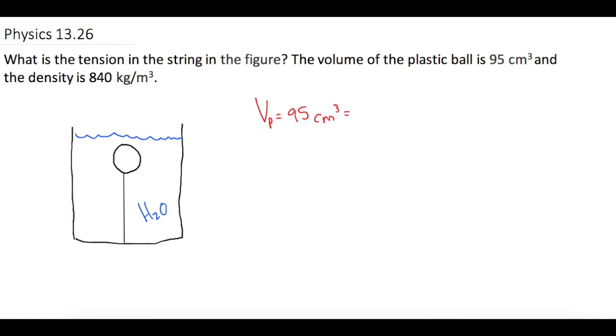Let's put that into cubic meters since that's what we're going to need it in. If we move the decimal place over 6, we get 0.000095 cubic meters. Now they tell us the rho of the ball or the density of it is 840 kilograms per cubic meter. And then we have that thing floating in water.